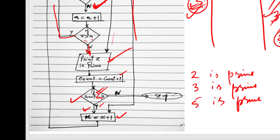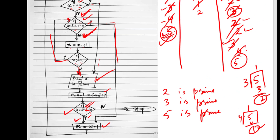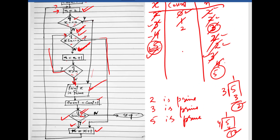When count reaches 10, the loop exits and the program stops. At that point it will have printed all 10 prime numbers: 2, 3, 5, 7, and so on. This is how the program works. Thanks for watching and don't forget to subscribe to Industry Technologies.